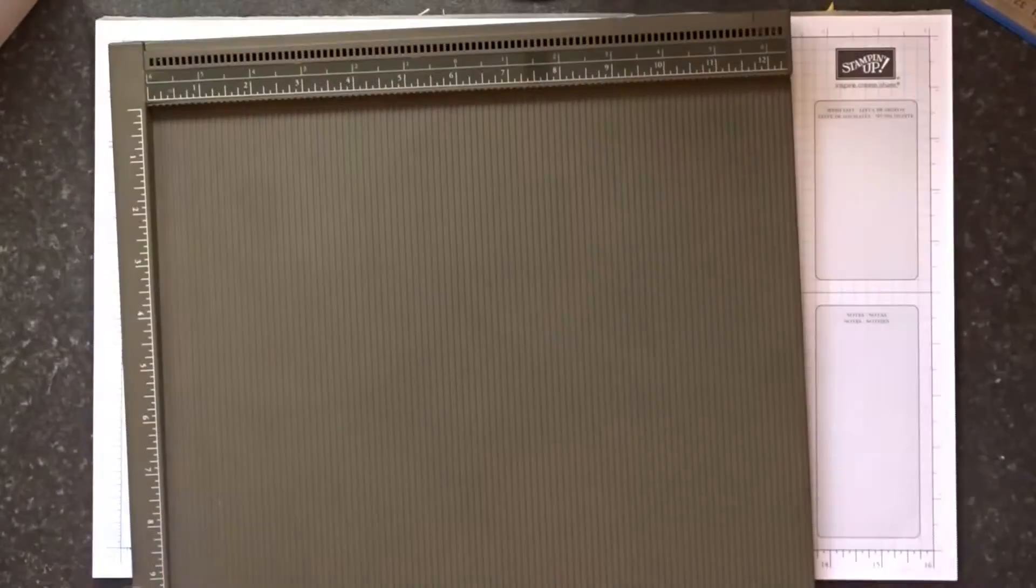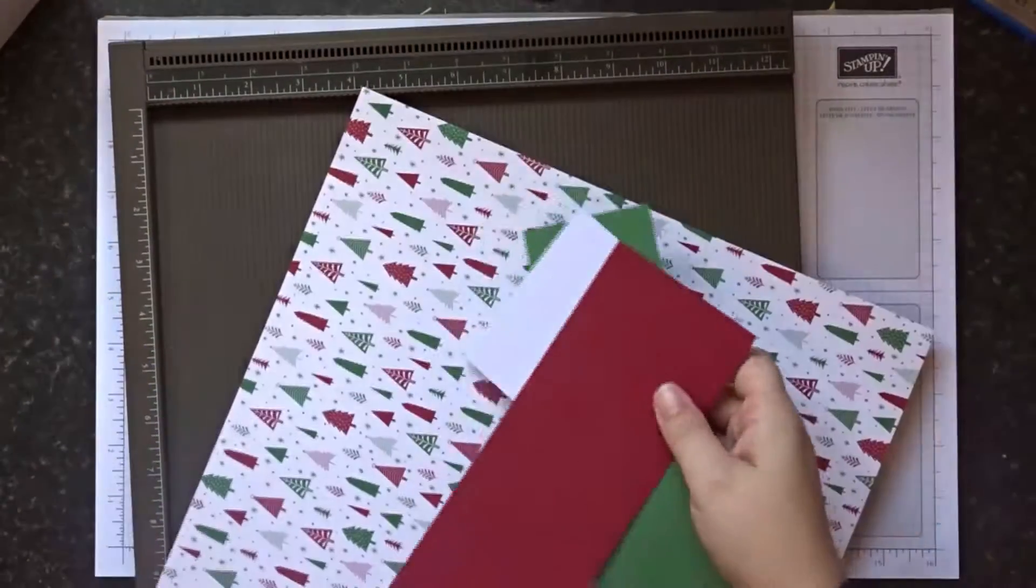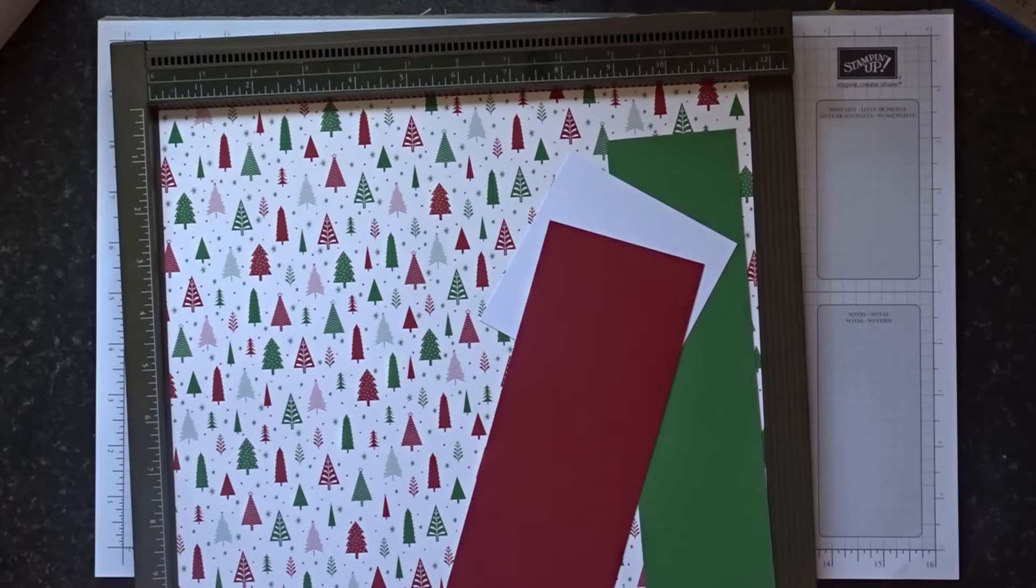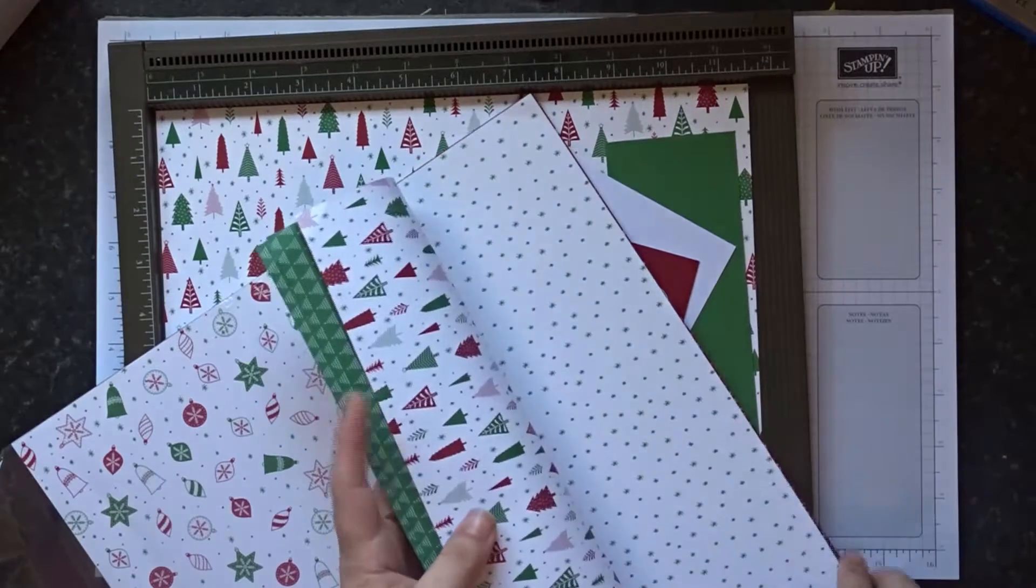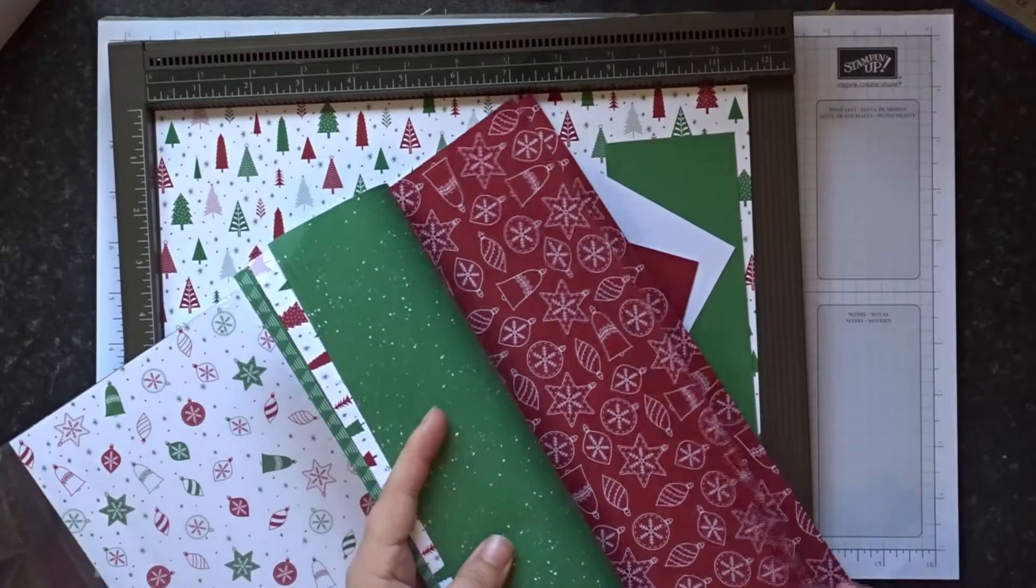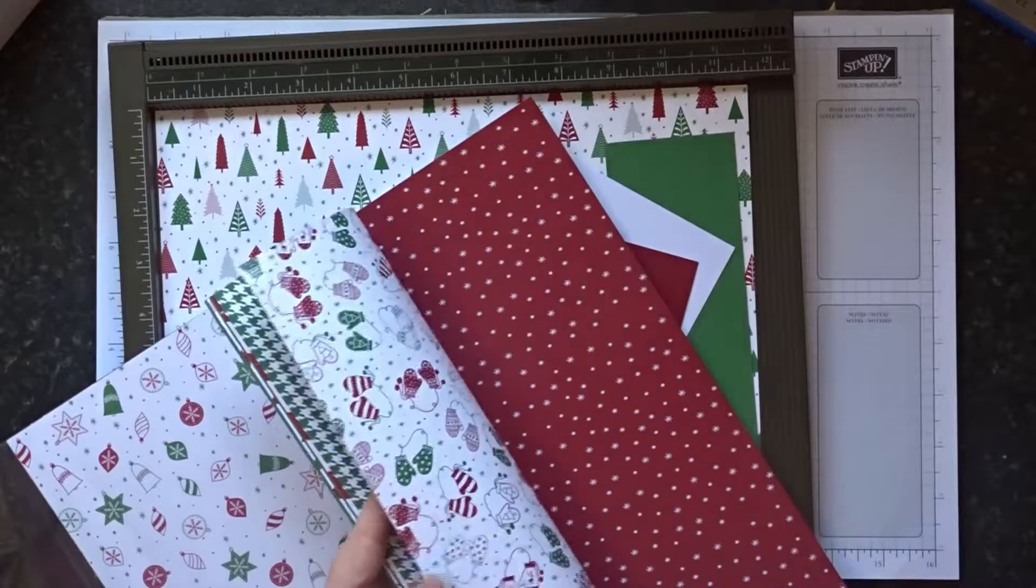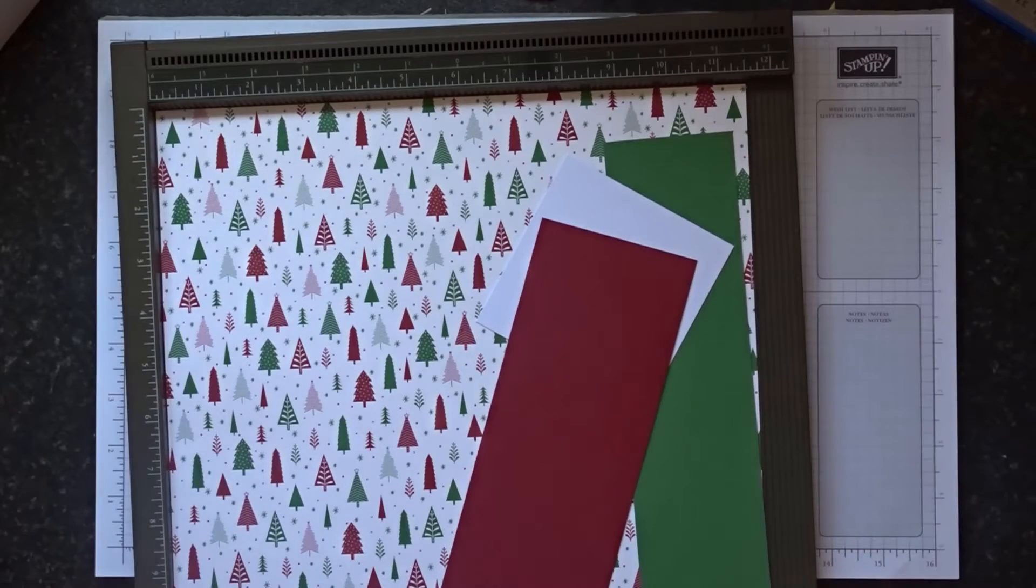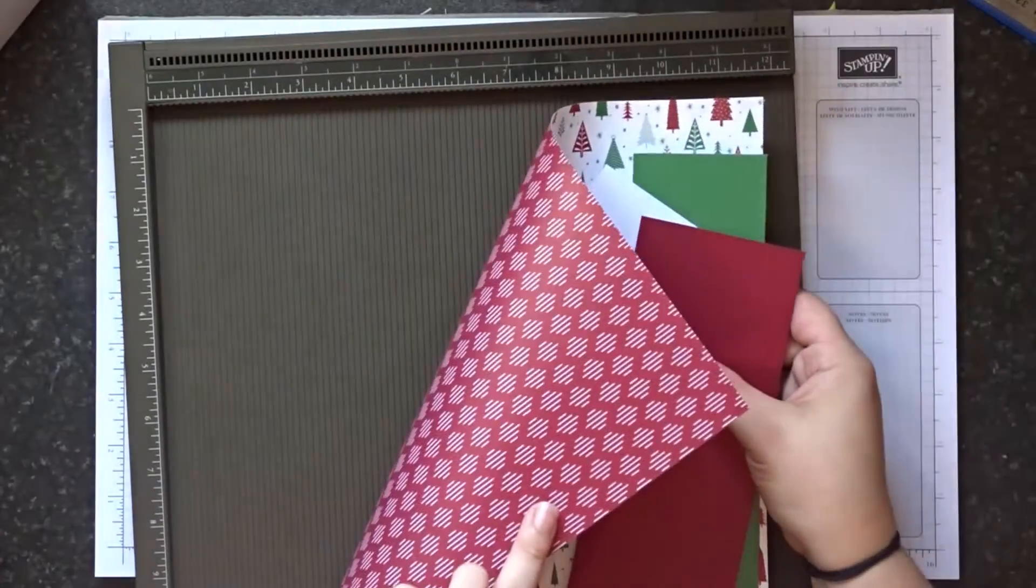So you're gonna need your scoreboard and a few different bits of DSP and cardstock. The DSP I'm using today is from the Be Merry collection. This is one of our items that's carried over from the last catalogue. If I just flick it through for you... absolutely gorgeous. I know we're in August but why not get a Christmas one done? You get 12 pieces of double-sided DSP and the one I've got is Christmas trees on one side and red on the other.